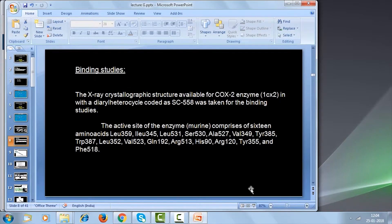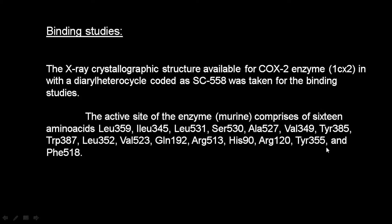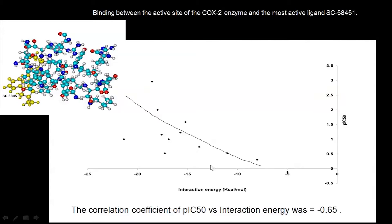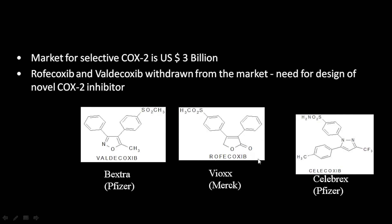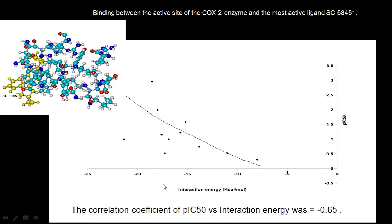We can use software like AutoDock since we know the active site of this enzyme and the amino acids present in it. When we do binding of each one of these molecules — about 12 molecules selected, some with selective and some not so selective activity — we know their IC50 values. We get the binding or interaction energies using AutoDock for all these molecules and plot their activity. There is a very good negative correlation: as the binding energy increases, the activity also increases. This is quite a good correlation coefficient.